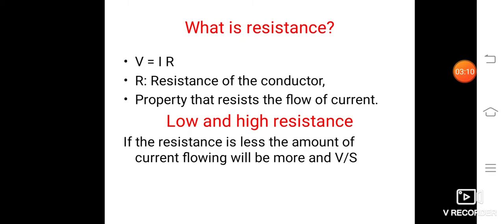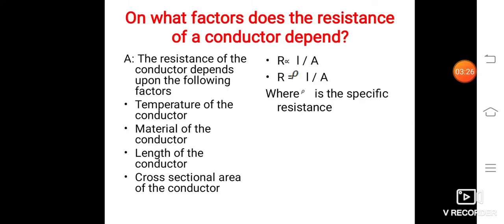For example, if you take the insulators, like Eraser, the resistance is more. The amount of current flowing in the insulator is less.